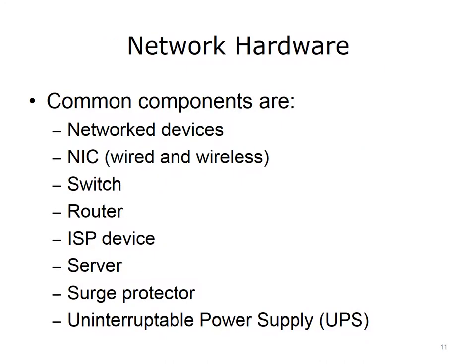Typical network hardware includes networked devices, a NIC either wired or wireless, a switch, a router, an ISP device if internet access is required, a server if managing a domain, a surge protector, and an uninterruptible power supply, which is known as a UPS. Let's look at each of these in more detail.